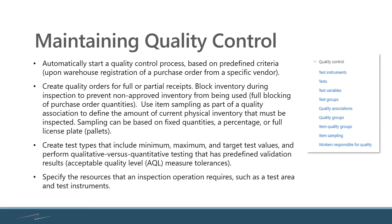You can choose to lock all of the quantity coming in until it's inspected, or you can do what's called item sampling. Item sampling is where you can indicate a certain percentage, maybe a fixed quantity, or maybe an entire pallet — they call them license plates in Dynamics. You set up your quality groups, indicate the type of quantity or percentage you want, and then determine whether you'll have full blocking or partial blocking.